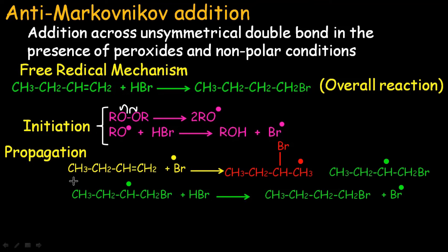These two steps are the propagation steps. Termination steps, which we usually do not discuss in detail for this reaction, typically involve the joining of waste products — for example, a bromine free radical joining with another bromine free radical to form Br₂. The free radical mechanism can also proceed at high temperature or in the presence of light.